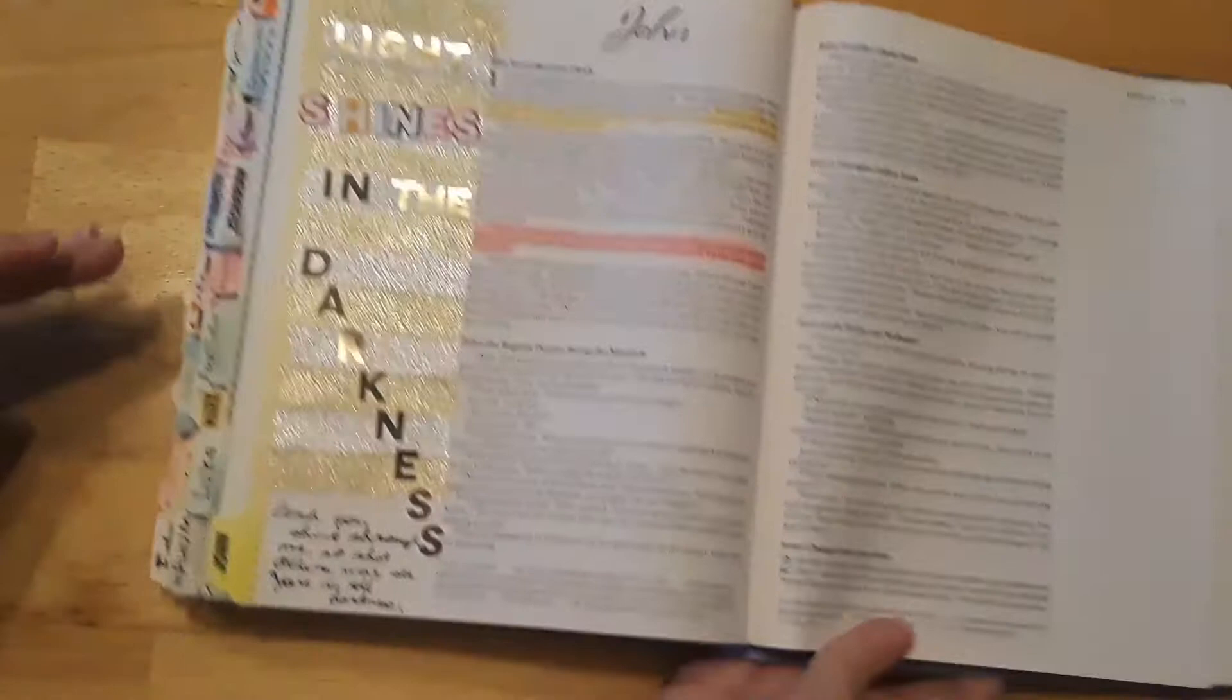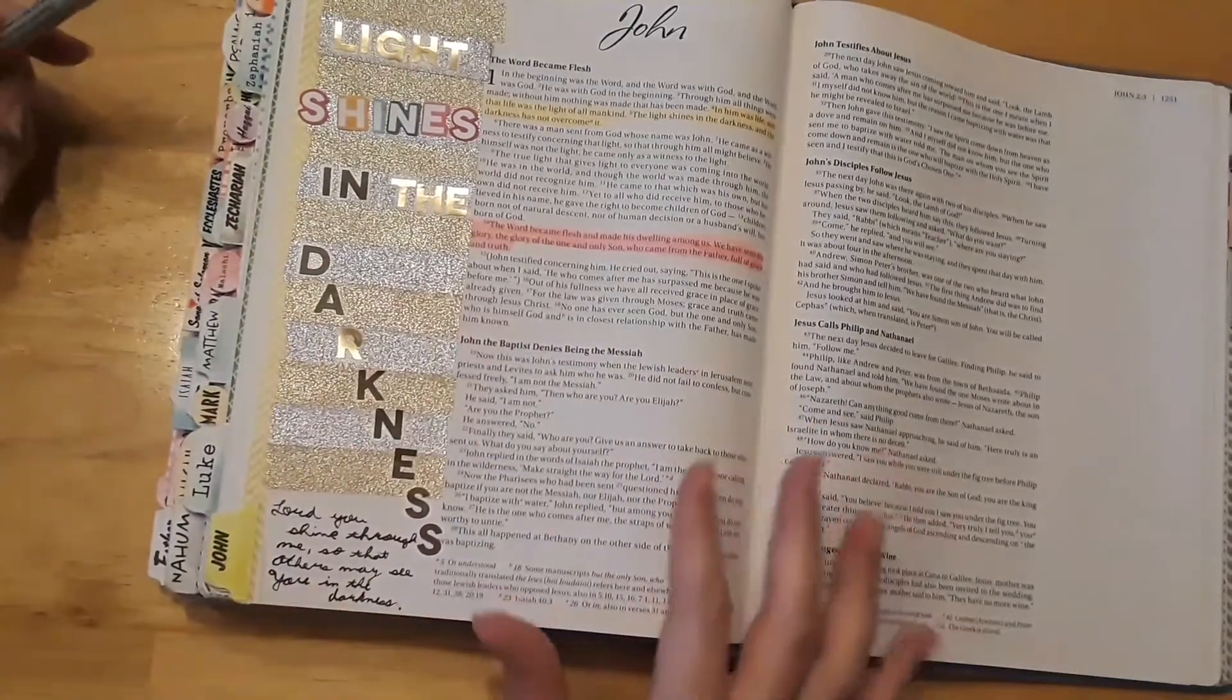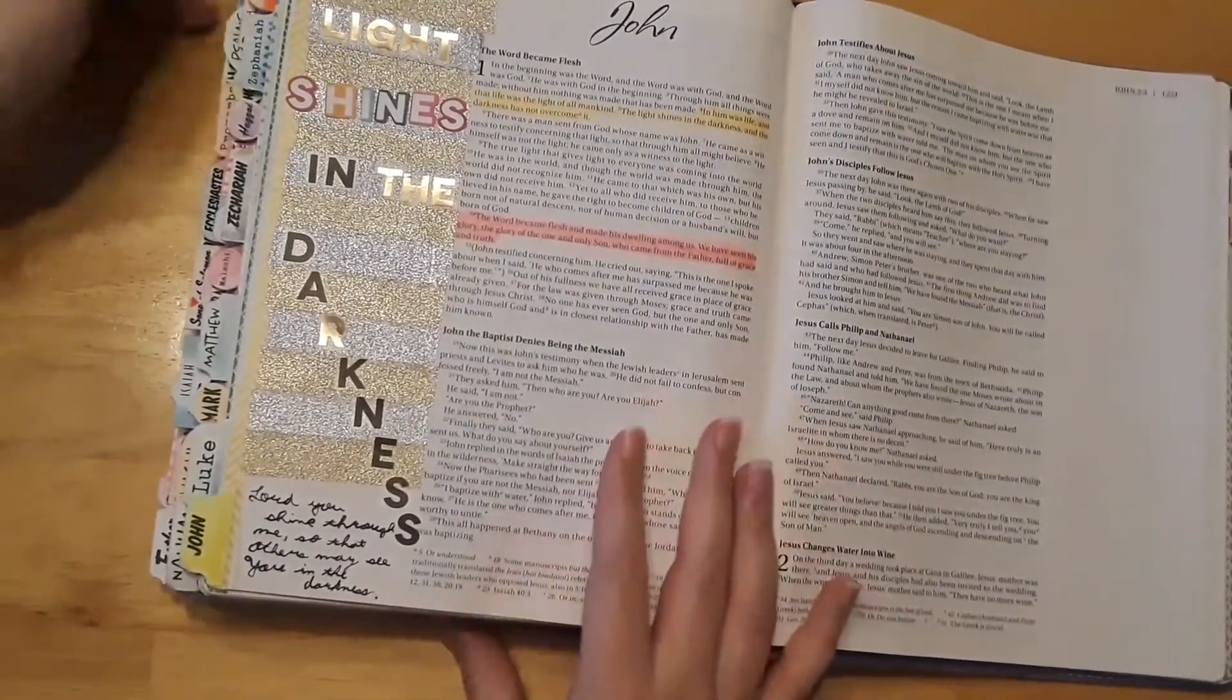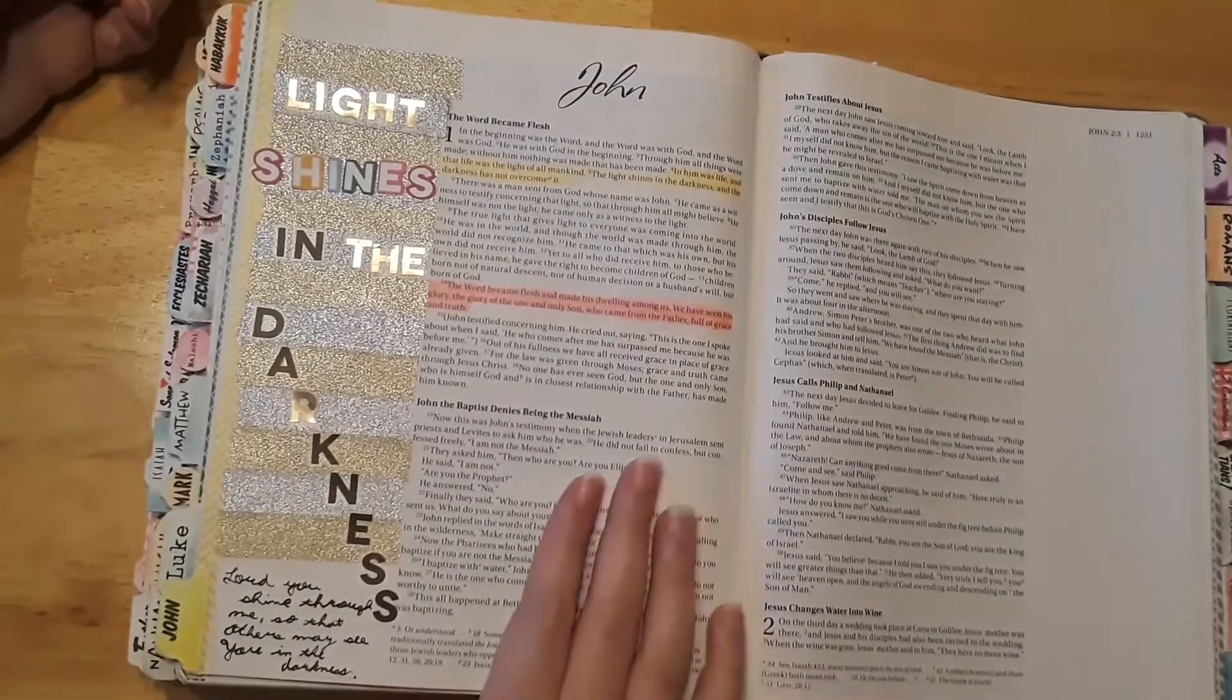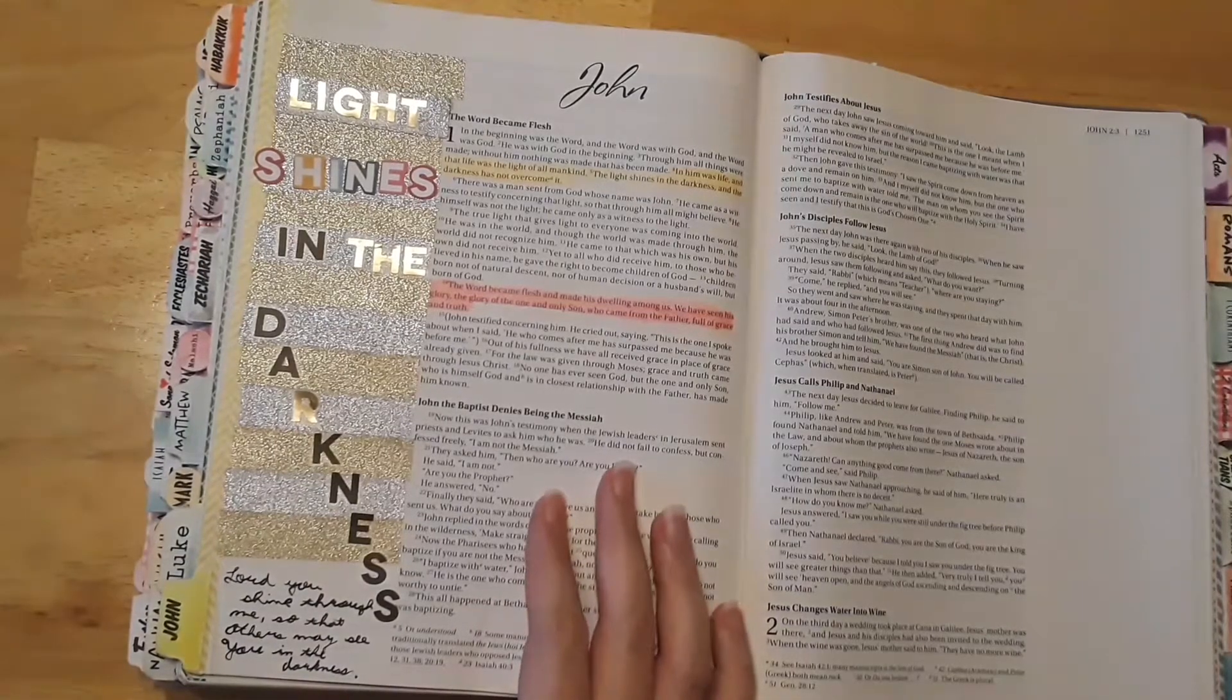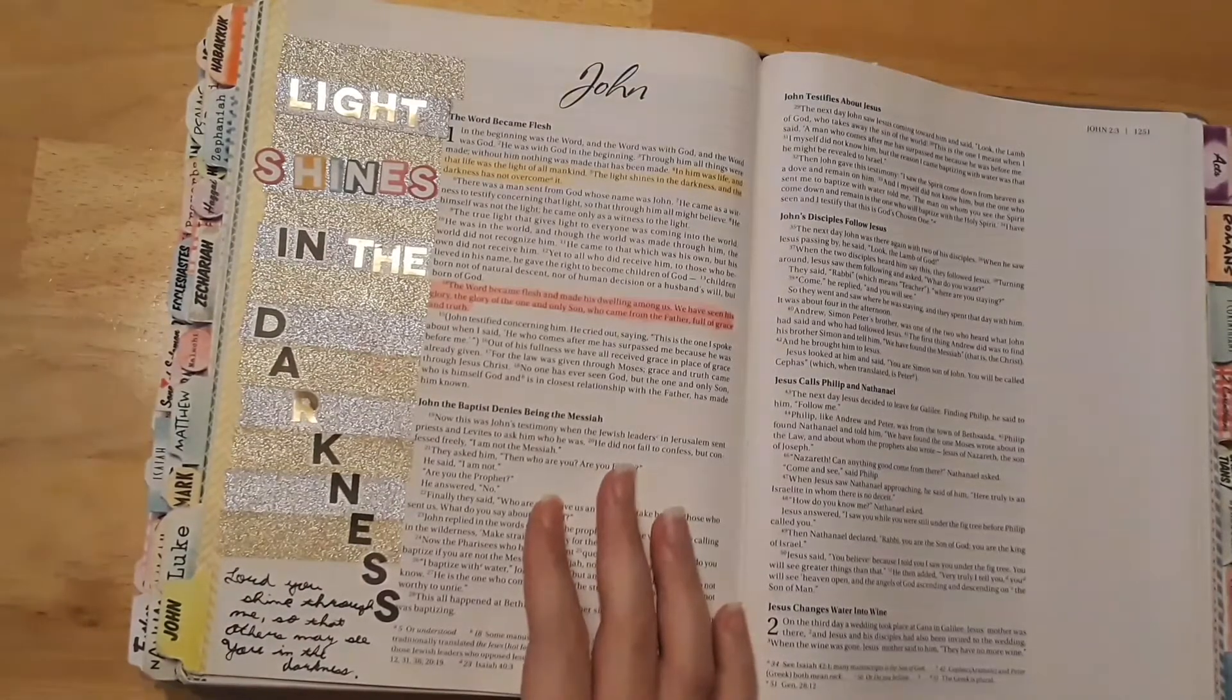Okay, so what I wrote down here was I just put 'Lord, you shine through me so that others may see you in the darkness.' So when other people are going through their darkest moments, they need to see God's light shine through and to help them just go through what they're going through. And if you've gone through the same thing they have, then share with them. It's okay to share with them. You know, they're not going to ridicule you if you share something that may be hard to share.